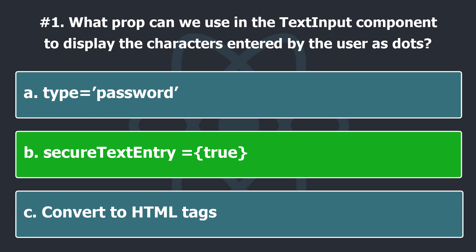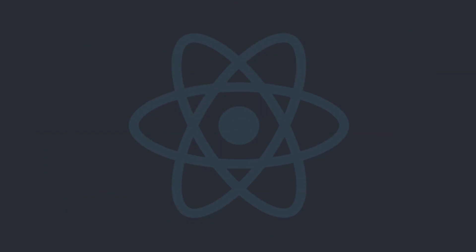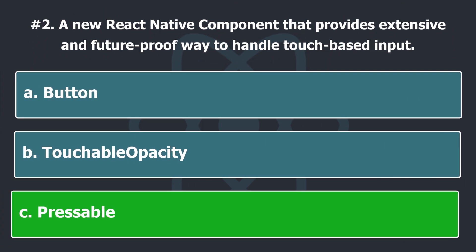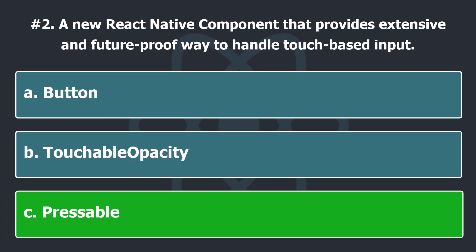The default value is false and this doesn't work when multiline is true. Pressable is a core component wrapper that can detect various stages of press interactions on any of its defined children.